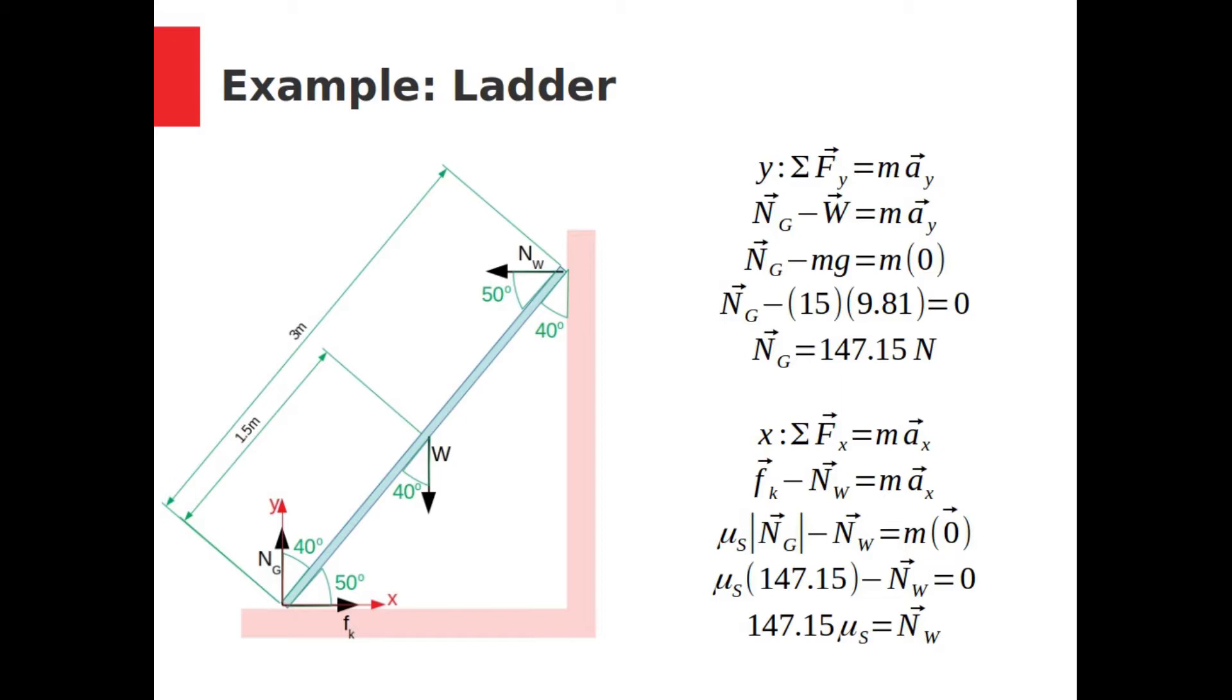We'll start by setting up Newton's second law for the y-direction. There are two forces acting in the y-direction, the normal force from the ground pointed up and the weight pointed down. Since the acceleration in y is zero, these two forces must cancel out, and so we can calculate the normal force from the ground.